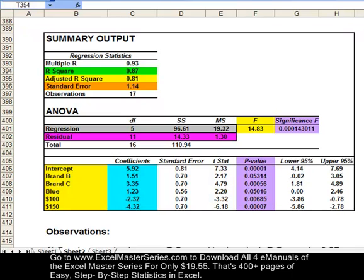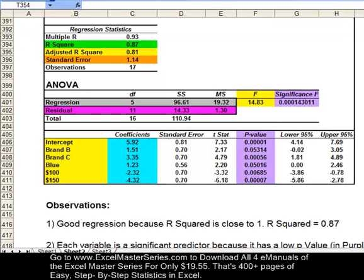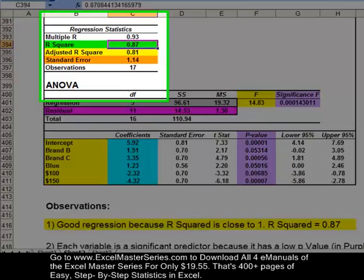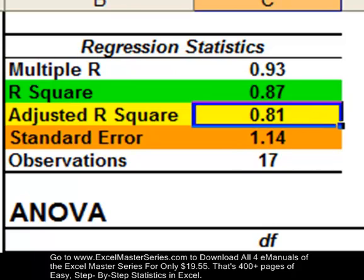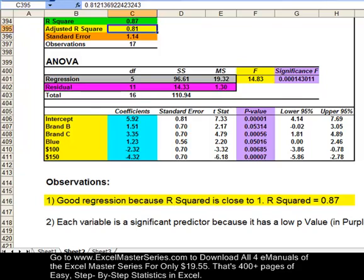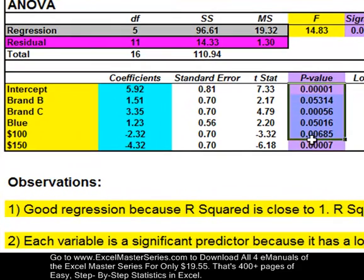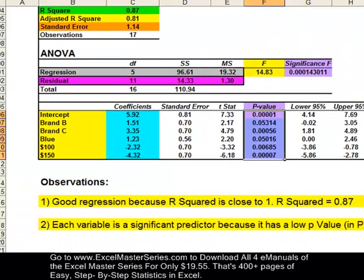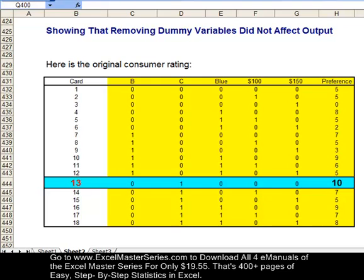Some more observations from this output. It's a pretty good regression because R squared is pretty close to 1. R squared is 0.87. Adjusted R squared is usually a little bit less. Each variable is a significant predictor because its p-value is very low. We're going to show that removing a dummy variable does not affect the output. Take the 13th card. The consumer rated that as a 10. Let's see if the regression predicts close to that 10 value.